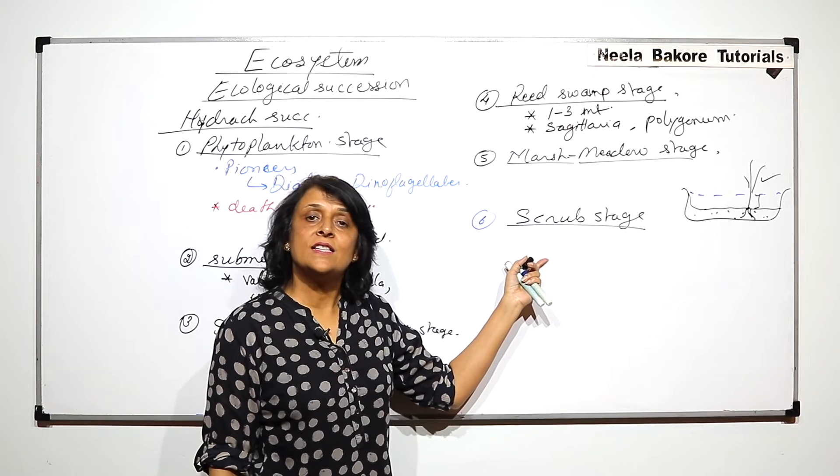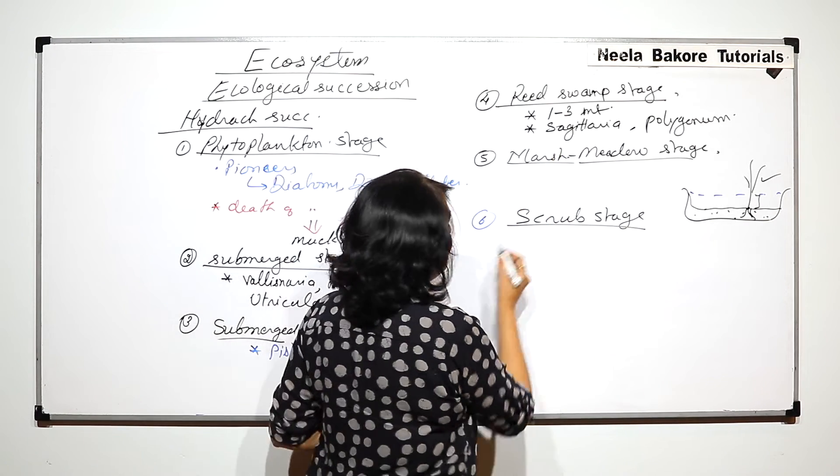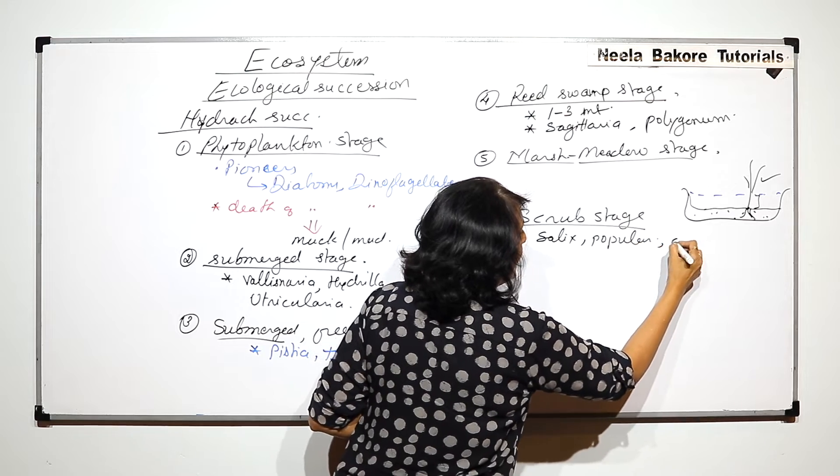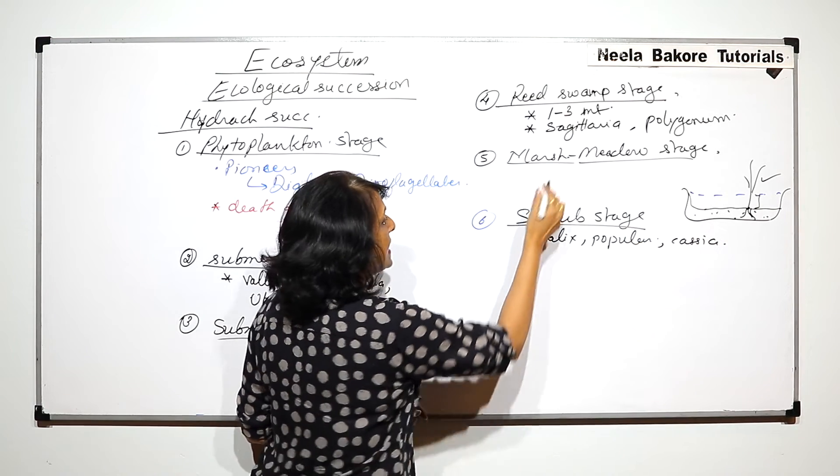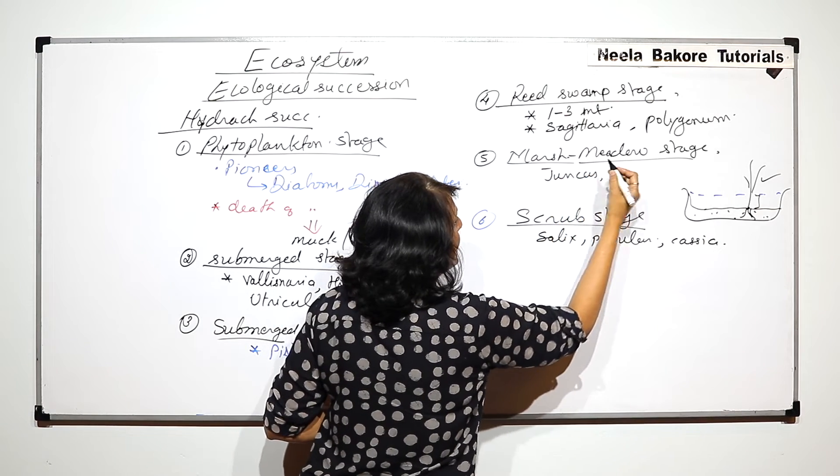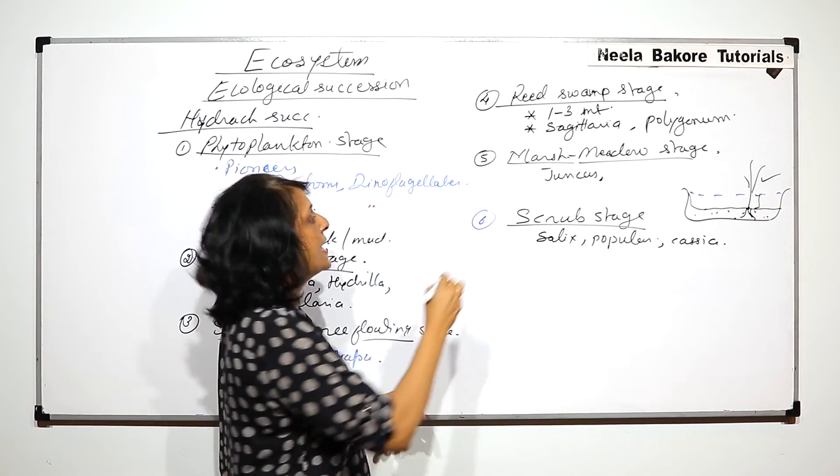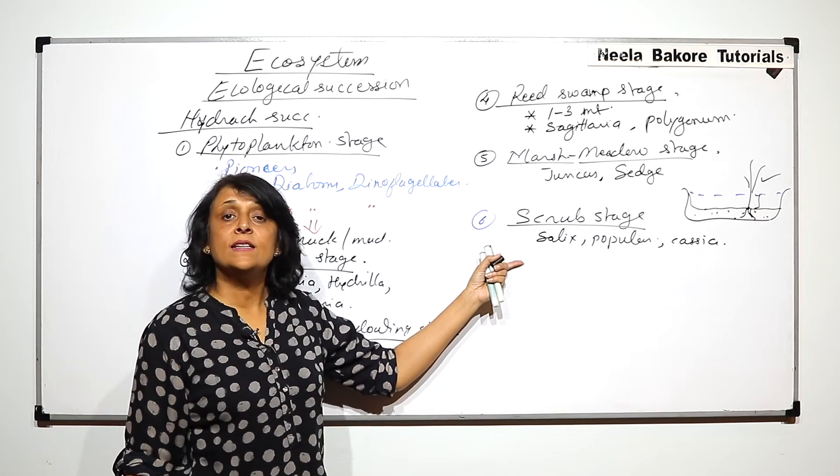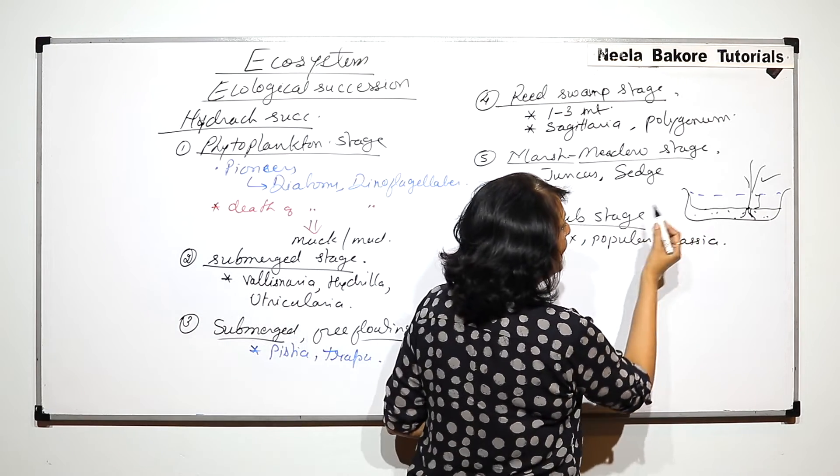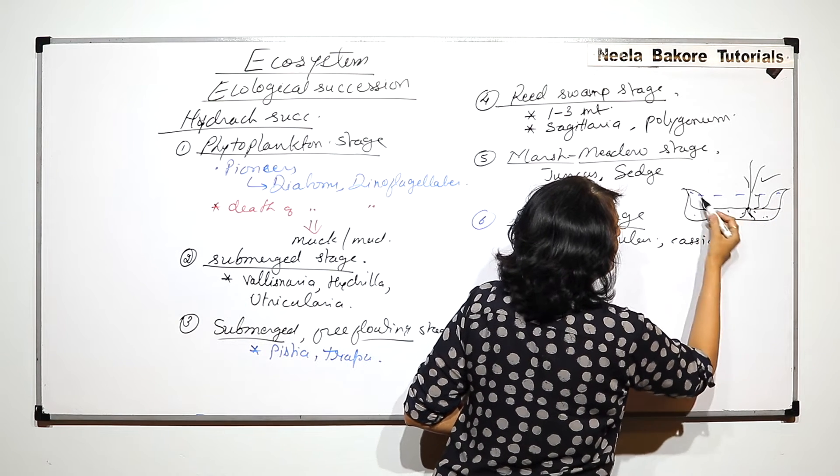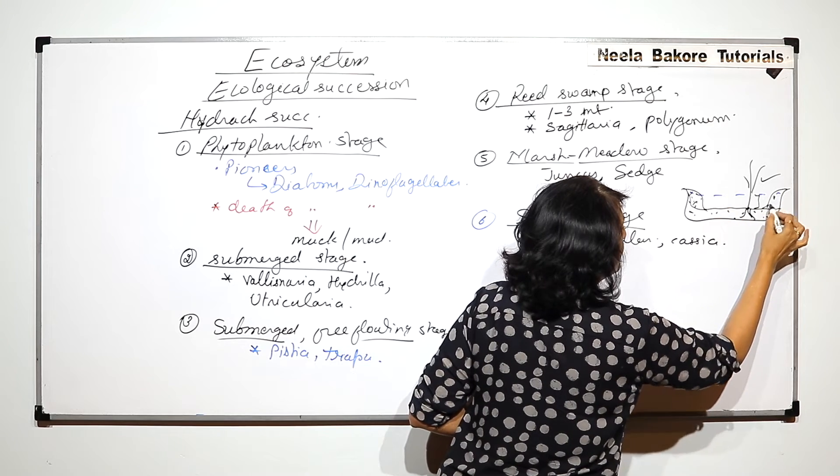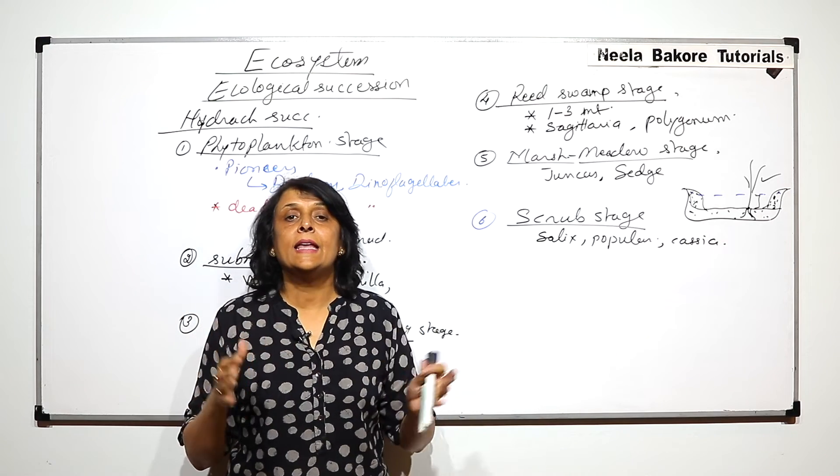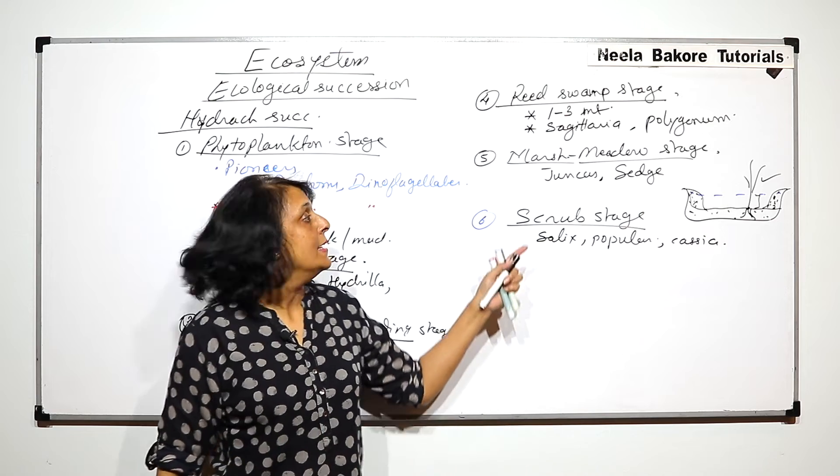In these two cases we will start seeing some small trees. Like in this case we would see salix, populous, casia, these kind of trees, whereas in marsh meadow, juncus type of trees and sedge. These are also short, small trees but in both cases these trees would appear and as the lake becomes shallower and shallower, the peripheral part also gets deposition of this organic matter and mud formation. So the diameter or the entire area will also become smaller and smaller and the depth of the lake will also go on decreasing.